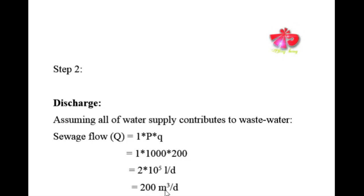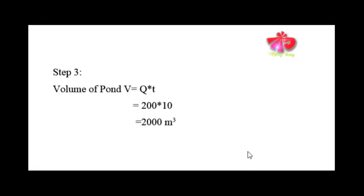Converting to cubic meters: since 1 cubic meter = 1000 liters, Q = 200 cubic meters per day. In Step 3, we find the volume of the oxidation pond using V = Q × t.